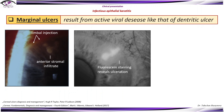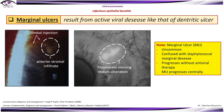Marginal ulcers result from active viral disease. Here we can see limbal injection as well as anterior stromal infiltrate, and fluorescein staining reveals ulceration. Marginal ulcers are uncommon and are mostly confused with staphylococcal marginal disease. Without antiviral therapy, marginal ulcers of this type of keratitis can progress, mostly centrally.